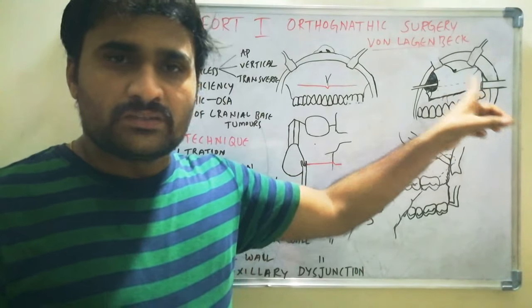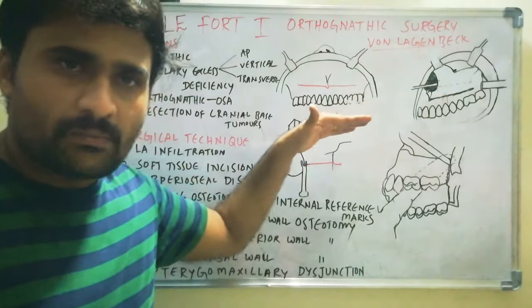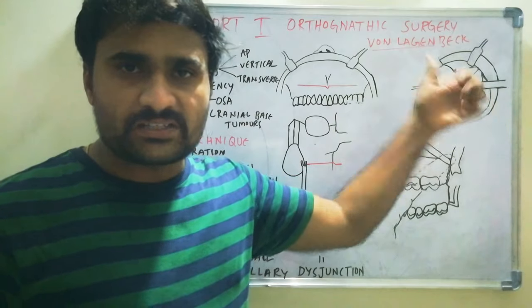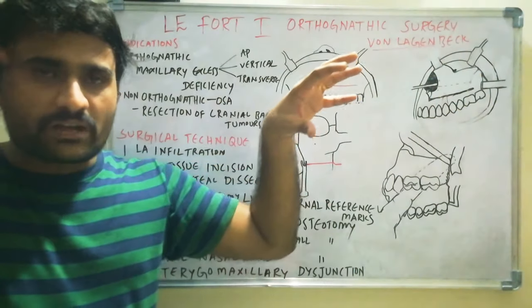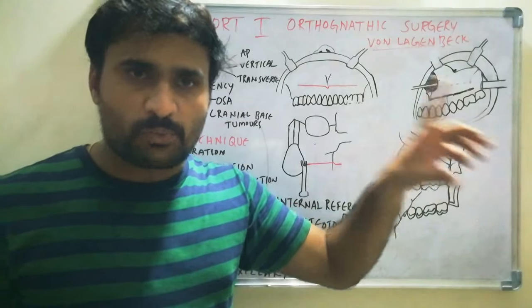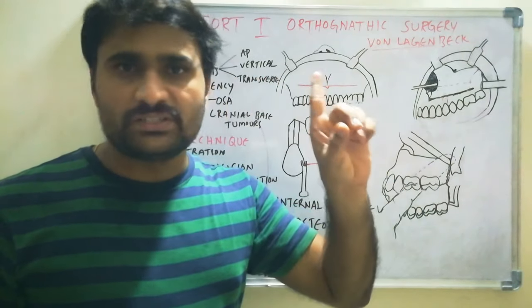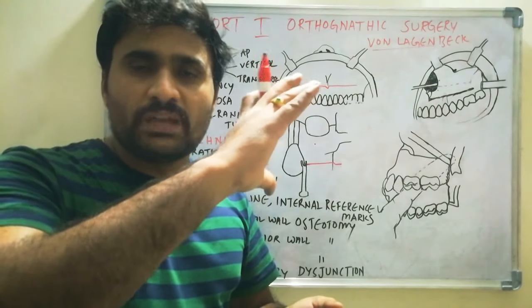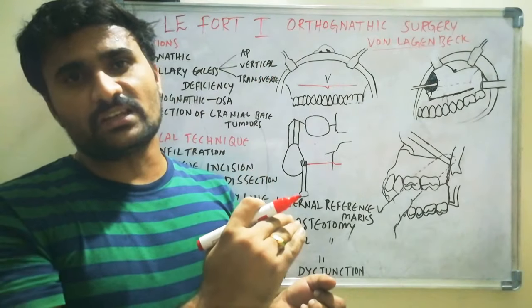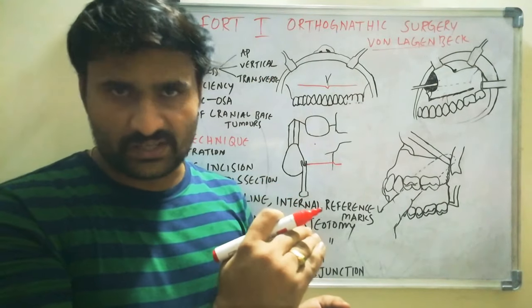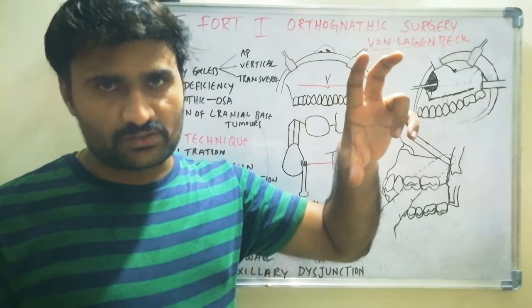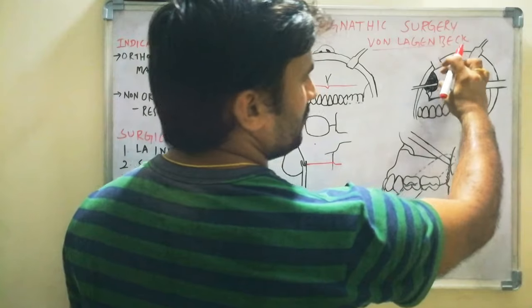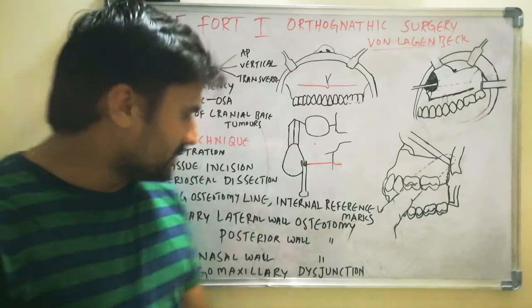Instead of using internal reference points, some surgeons also utilize external reference points by fixing a KY at the nasal bridge — that is at the nasal point — and measuring the difference between this KY and the braces on the maxillary central incisors. For internal reference points, you must measure the distance between the two marked points.